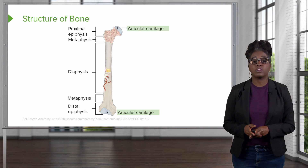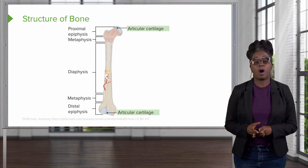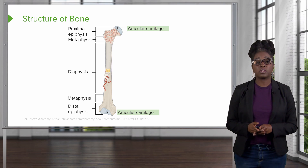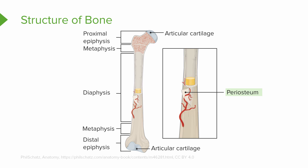The long bone also consists of other parts. At the ends of each of the bones, on the epiphyses, you will have the articular cartilage. This is going to be important for joints. Also, on the outside of the bone, you have a connective tissue layer known as the periosteum. Inside of the bone, there is a hollow space that we refer to as the medullary cavity. And finally, inside of this medullary cavity, there is also a connective tissue lining known as the endosteum.